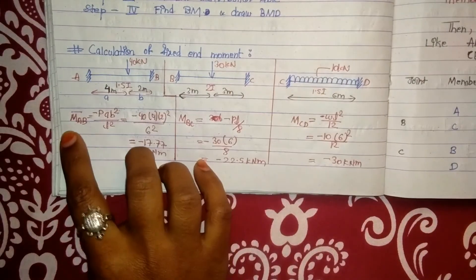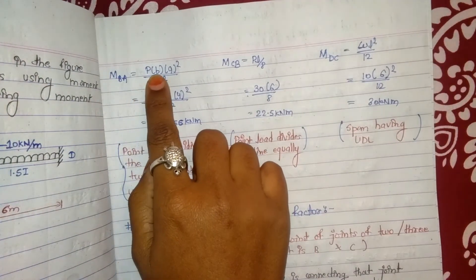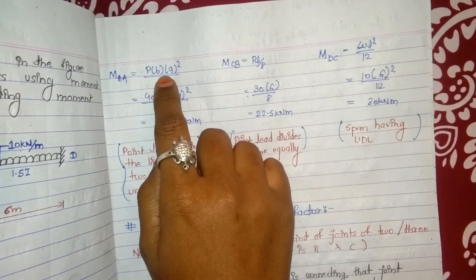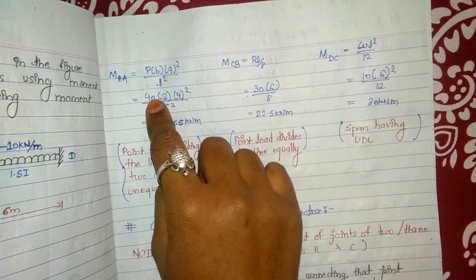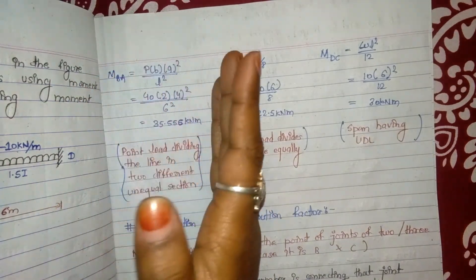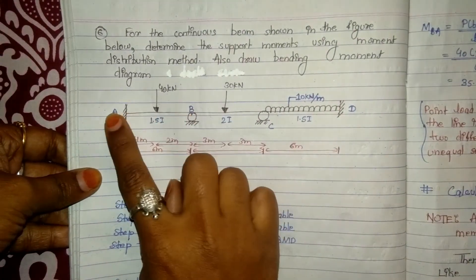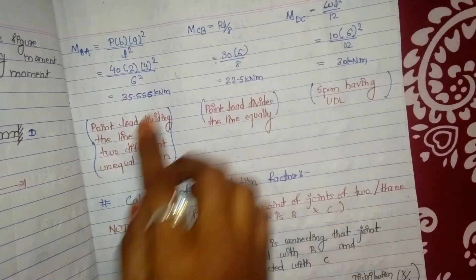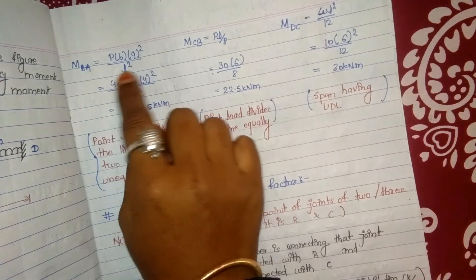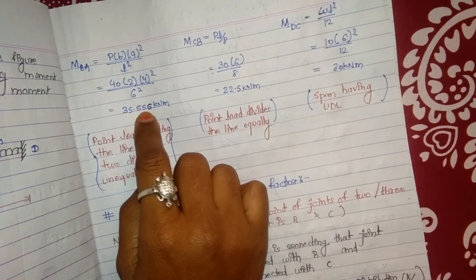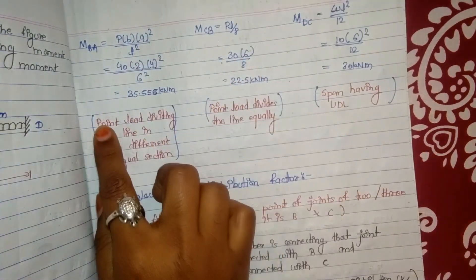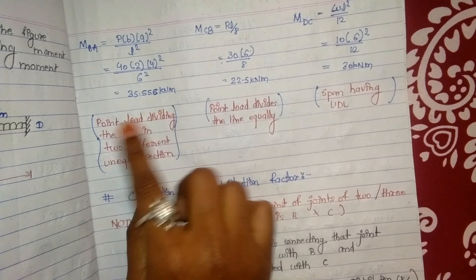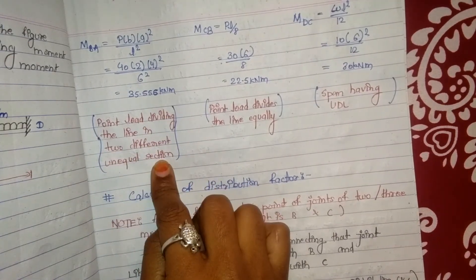We calculated P·a·b² (i.e., Mab), now we will find P·b·a² (i.e., Mba). Pba equals P × b × a² / L². Previously we had P·a²·b / L², but now we are finding moment from b to a, so the formula becomes P·b·a² / L², and the value comes out to be 35.556 kN·m. This formula is applied when the point load divides the line into two different unequal sections.